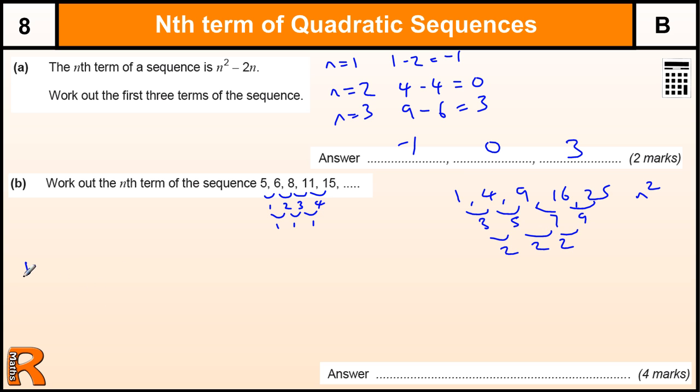So if we write down a half n squared, there's n squared, let's try and write down the half n squared now. So we've got a half of n squared is 0.5, 2, 4.5, 8, and 12.5.